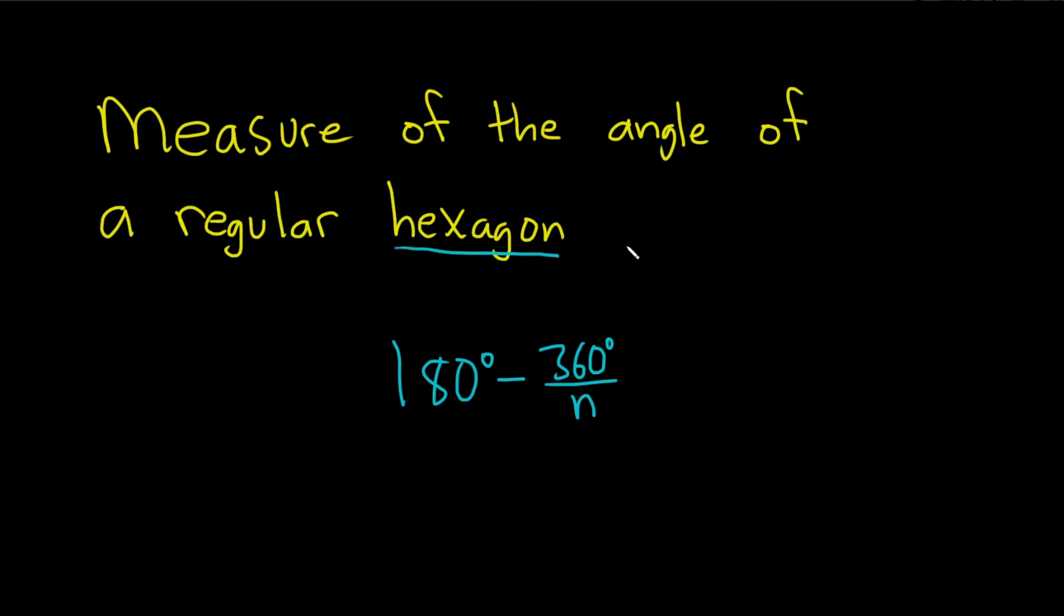A hexagon has six sides, so n is equal to six because n is the number of sides. All you have to do in this problem is plug in the six. This is 180 minus 360 divided by six.